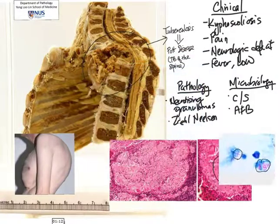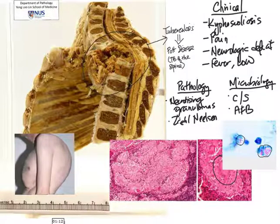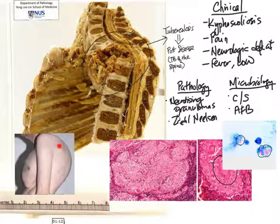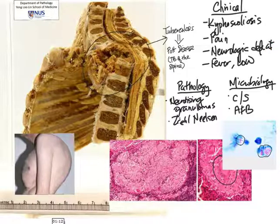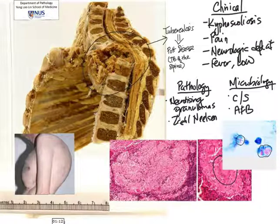Essentially, I've taken you from the gross pathology specimen showing the cervical and thoracic spine. We see the obvious destruction of the vertebral body, due to tuberculosis of the spine known as Pott disease. The patient will have very severe kyphosis, pain, may have neurological deficits, and may have systemic symptoms as well. We diagnose this by tissue biopsy of the vertebral body, sending it to pathology to look for necrotizing granulomas and acid-fast bacilli, and also to microbiology to specifically culture the organism and perform microscopy for acid-fast bacilli.